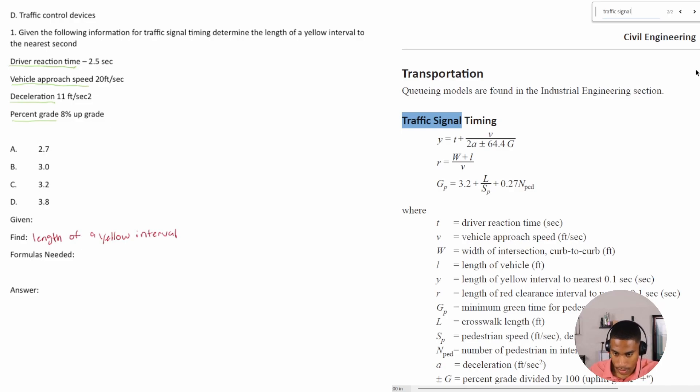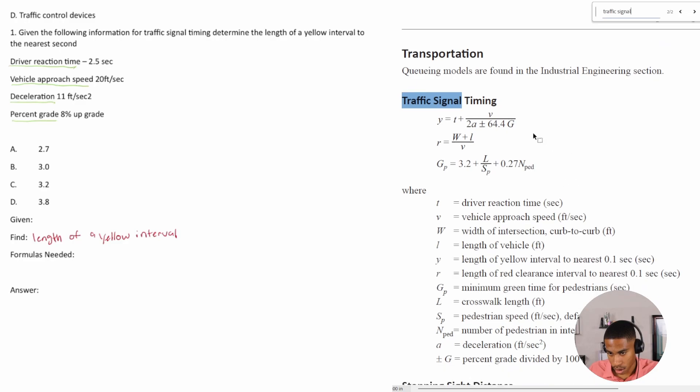Cool, traffic signal timing, right. All right, so do we see anything for a length of yellow interval? Okay, okay, okay, so Y, it's like Y is equal to the length of yellow interval for the nearest second. Cool, so we have Y, or we're trying, we're looking for Y is what we're trying to find.